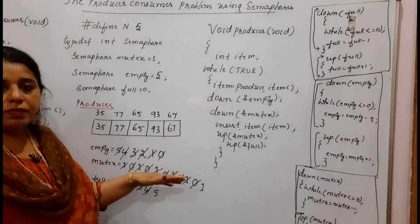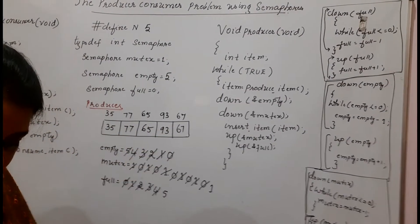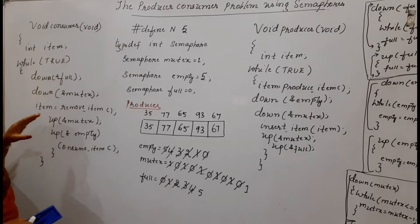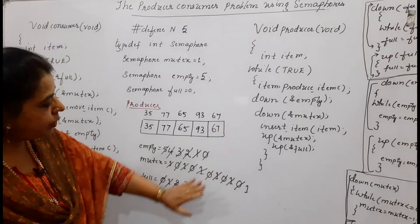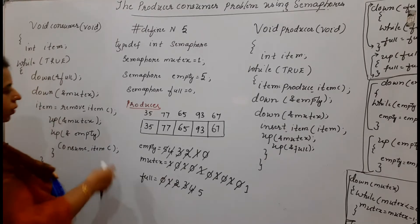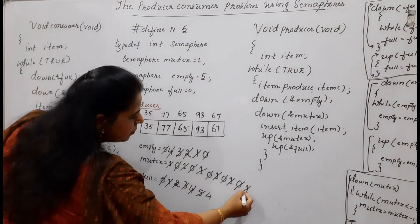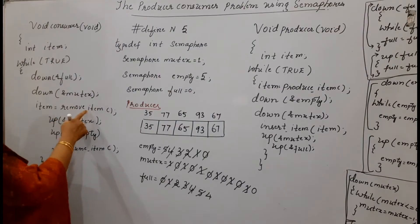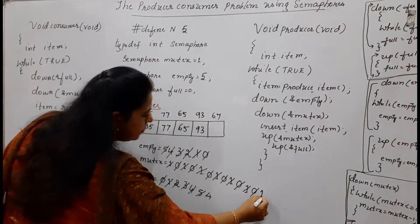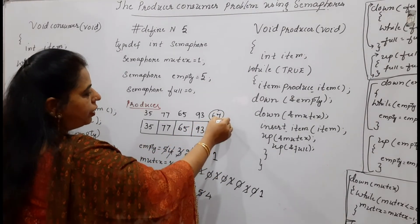Now we continue with the consumer code. The consumer takes out items from the buffer one by one. The consumer executes: down on full — making the value 4, down on mutex — value becomes 0, then removes the item. Up on mutex, up on empty, then consumes the item — whether writing to a file, to the monitor, or printing.